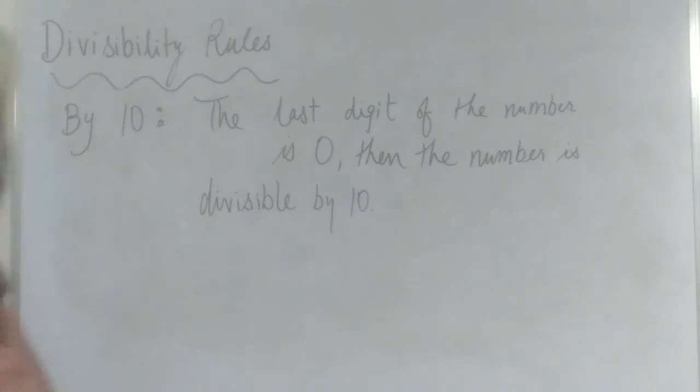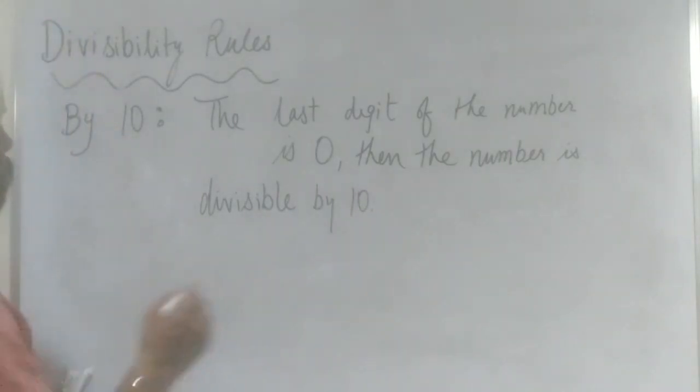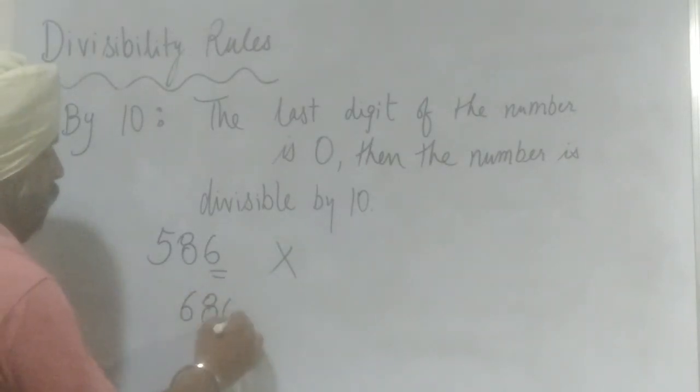If the last digit is 0, then the number is divisible by 10. Like 586 - if the last digit is 6, the number is not divisible by 10. But 680 - if the last digit is 0, then the number is divisible by 10.